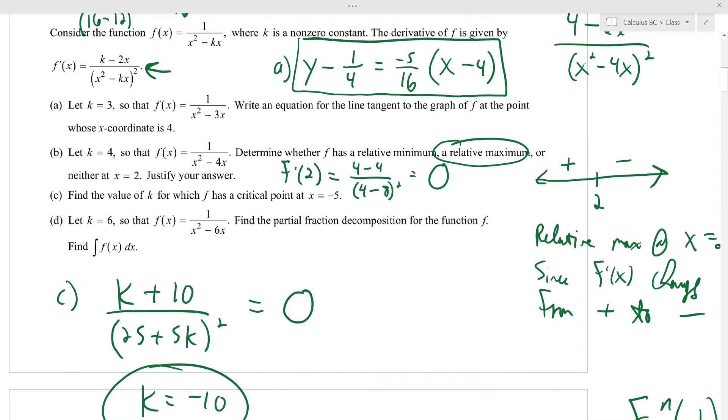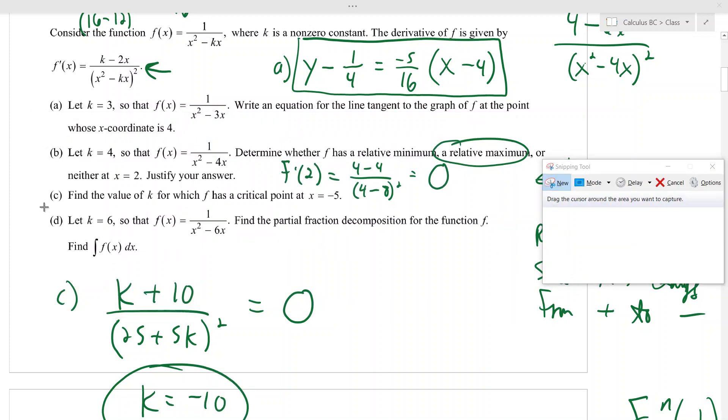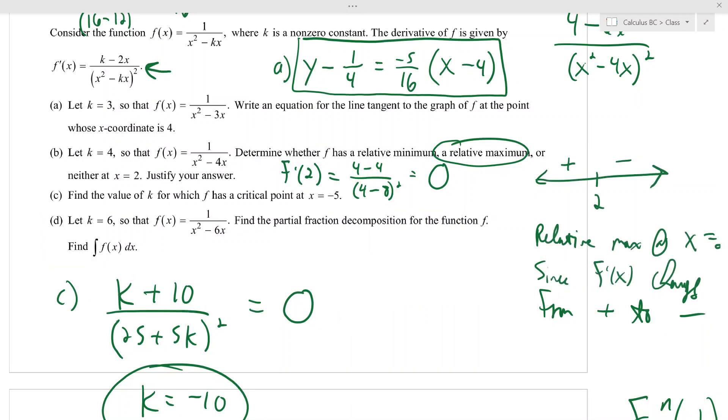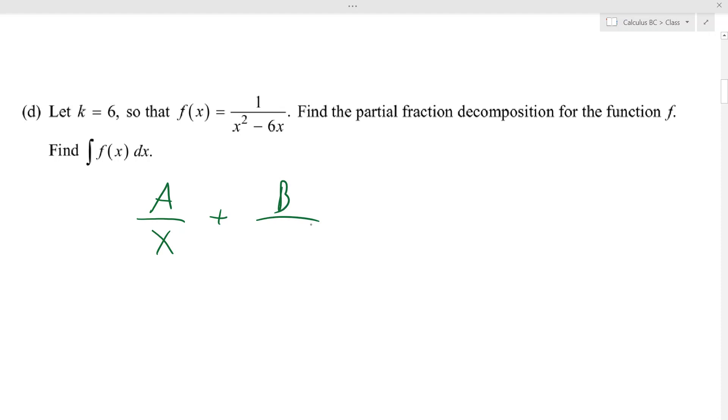That seems like a super easy question. Find the value of k for which f has a critical point at x equals negative 5. Derivative, yeah, okay. Find the partial fraction decomposition and find the integral. Okay, let me just steal that. Don't these all seem so easy now that we've gone through all the BC curriculum? You guys are probably just like, oh, this is so boring because it's so easy. Give me a challenge, calculus.